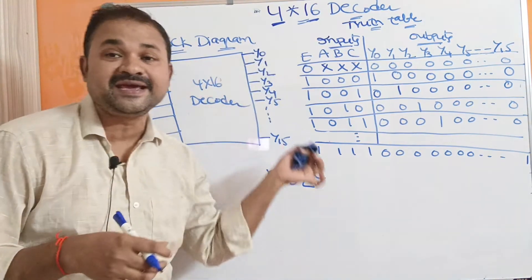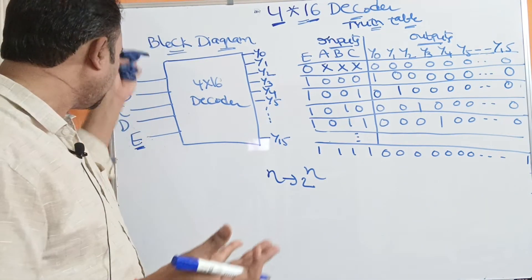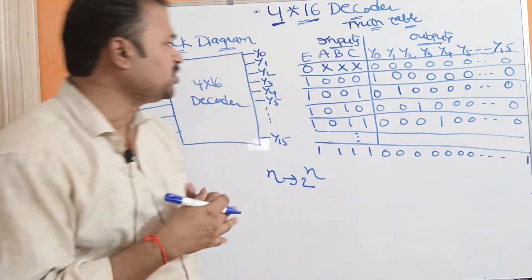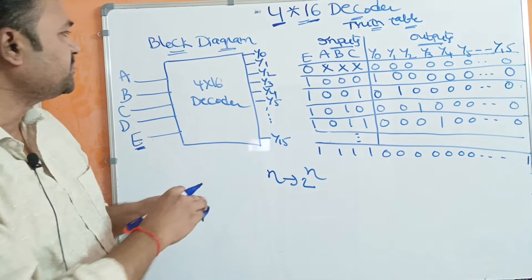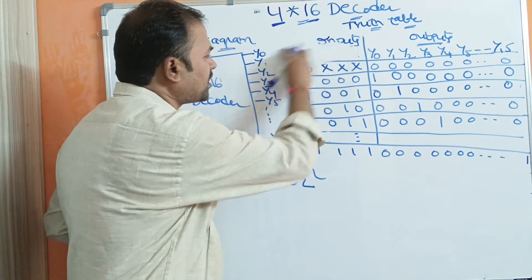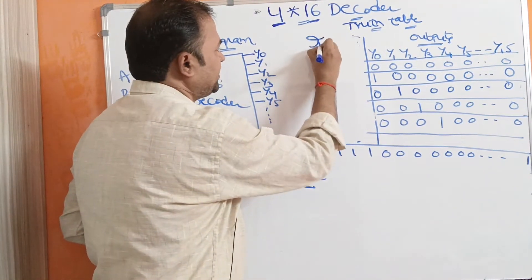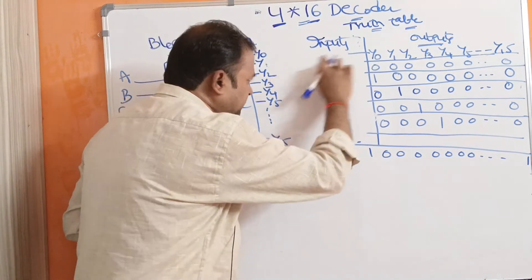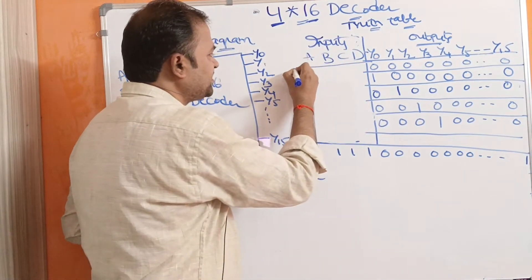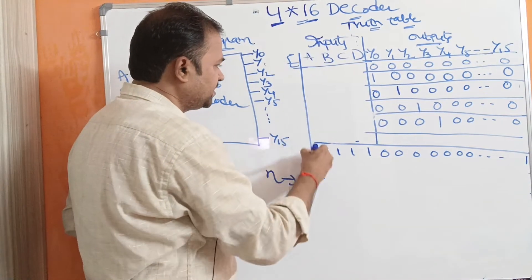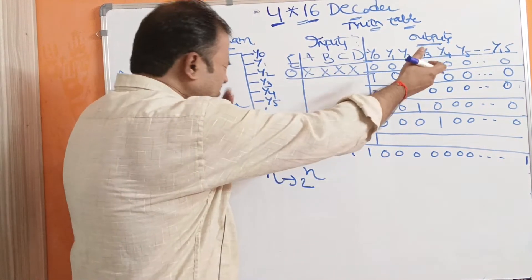A 4 by 16 decoder converts 4 input lines into 16 output lines. Which output line will be active depends upon the inputs that we apply. Let us see the truth table. Here we have 4 inputs: A, B, C, D. It produces totally 16 outputs. We also require one more input called enable input. If the enable input is 0, then irrespective of the inputs ABCD, it doesn't produce any outputs.